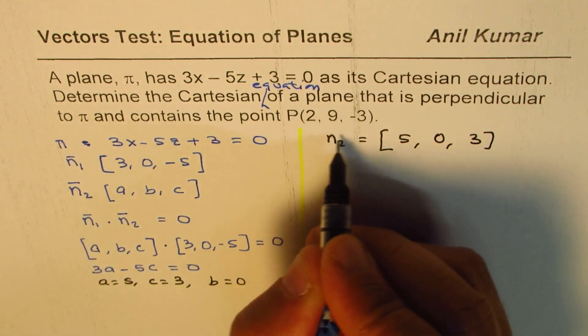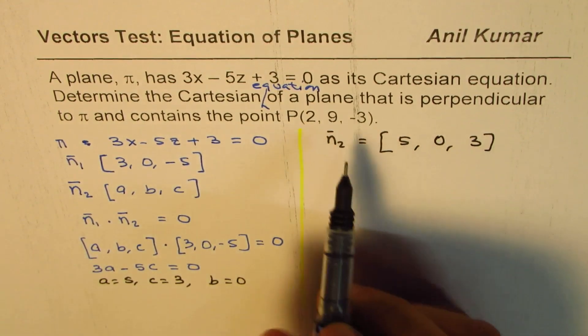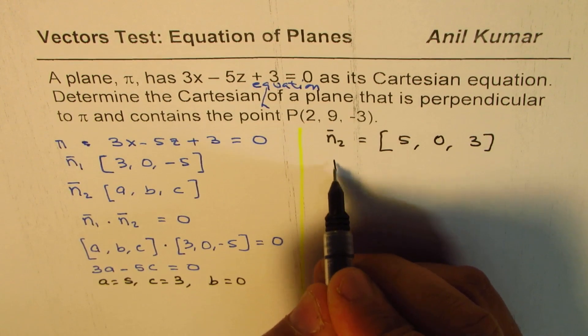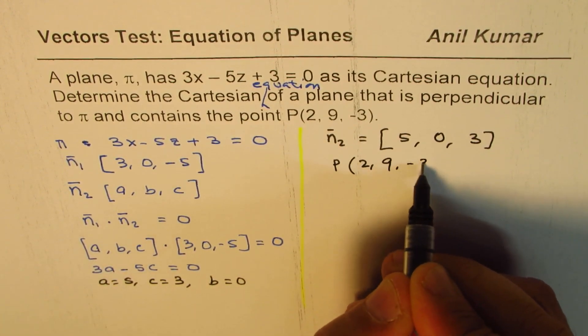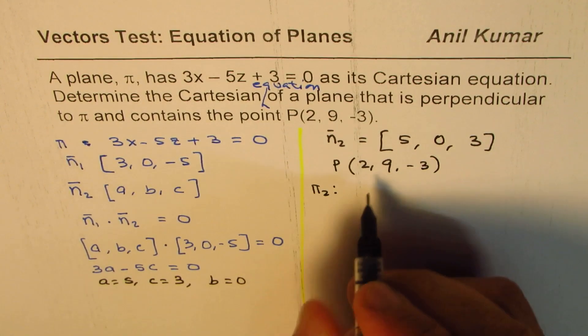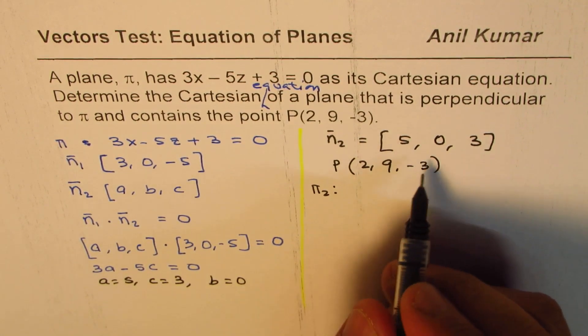With that we get the normal n₂ as [5, 0, 3]. That becomes the normal for the plane which is perpendicular to the given plane, and now we can write down the Cartesian equation which has this normal and the point P(2, 9, -3).